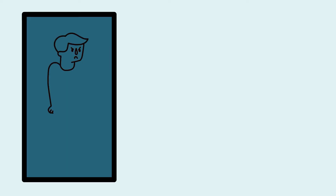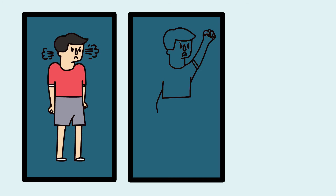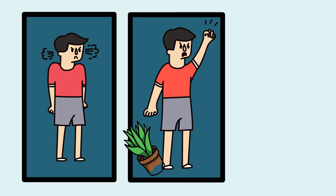Children who are impulsive seem unable to control their immediate reactions or to think before they act. They find it difficult to wait or take turns, and have difficulty resisting immediate temptations or delaying gratification. Minor mishaps such as knocking things over are common, whereas more serious accidents and injuries can also occur.